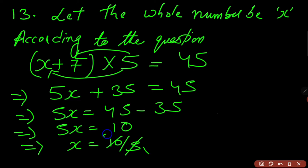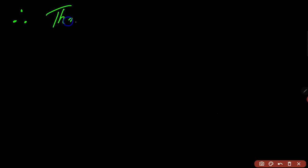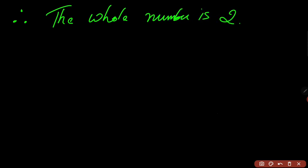This gets cancelled. Therefore the value of x is 2. So the whole number is 2. I hope you have understood this question. Thank you so much.